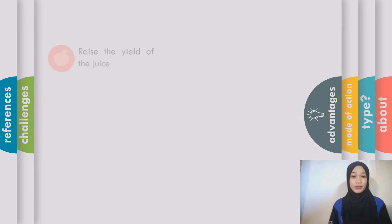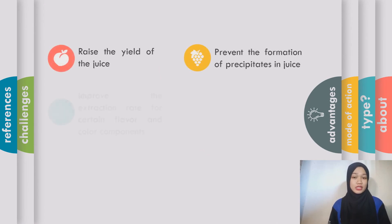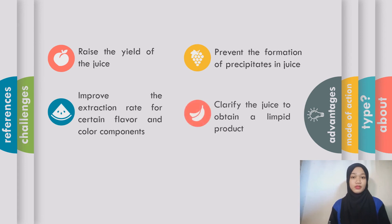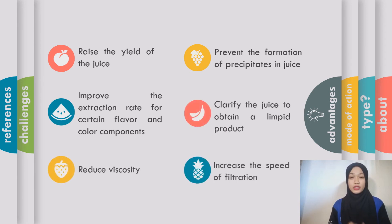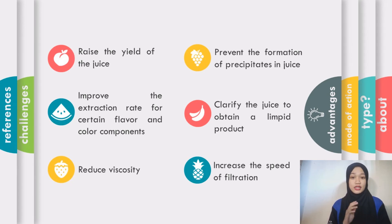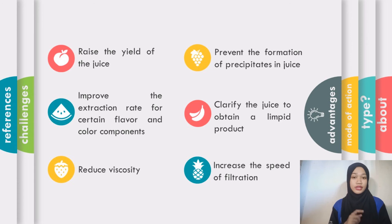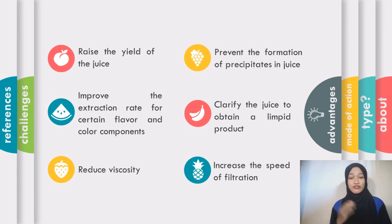Hi, my name is Sharwini Binti Osman and I would like to present about the advantages of enzyme in fruit juice production. As you can see in the slides, there are many benefits listed. Firstly, during the treatment of fruit juice, the enzyme presses the juice seal and improves the extraction rate for certain flavor and color components. Next, the enzyme reduces the viscosity and increases the concentration to obtain a limpid product, as well as prevents the precipitation of the juices. Lastly, the application of enzyme in fruit juice production enhances the filtration process, which increases the speed of filtration.